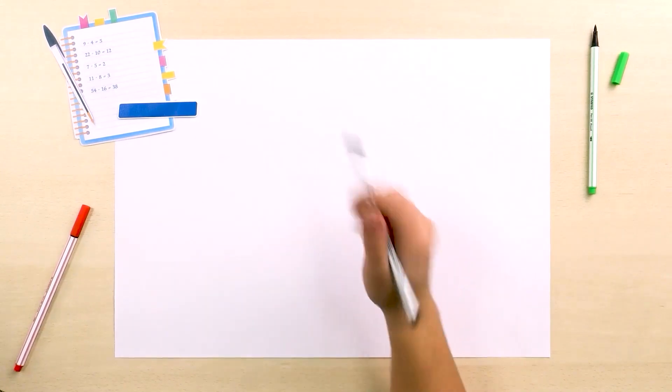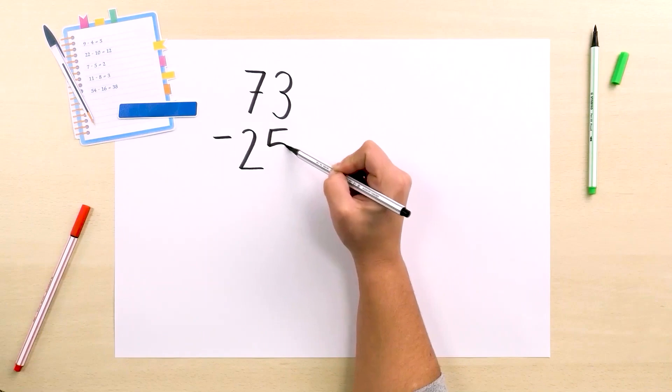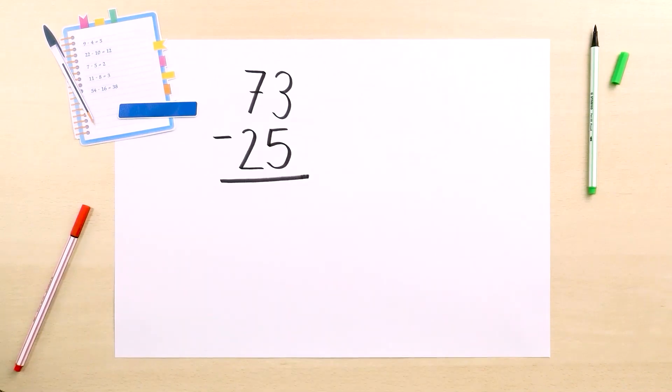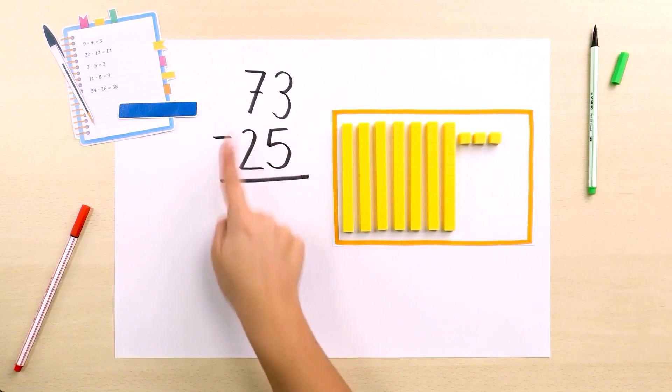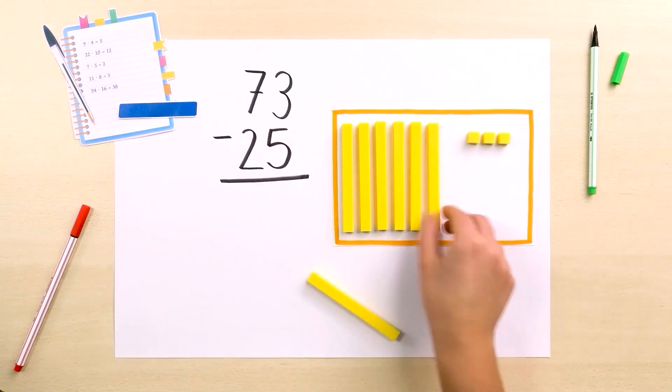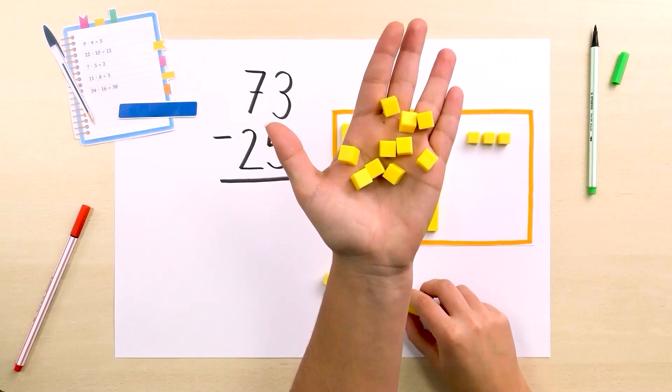But what would happen if it were 73 minus 25? We represent 73. To take away 25 cubes, we could take away 2 bars first, but we cannot take away 5 cubes. We need to swap one of the bars for 10 cubes.